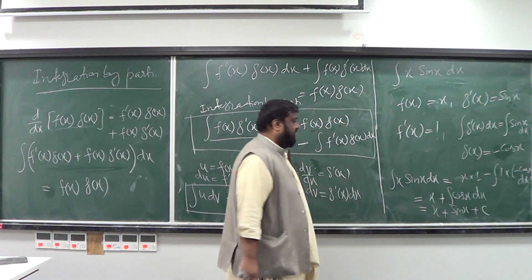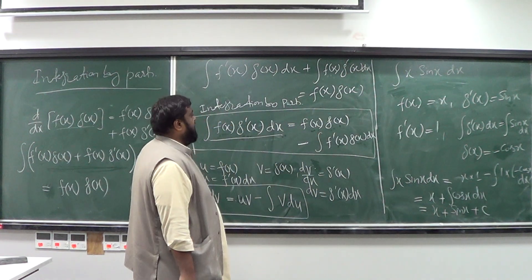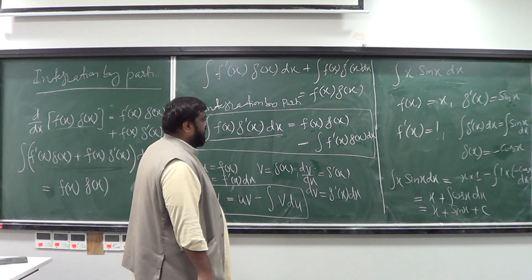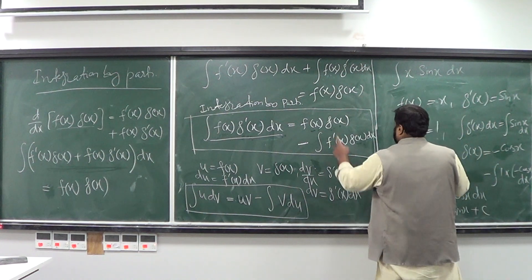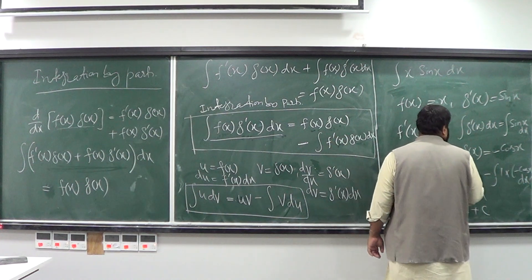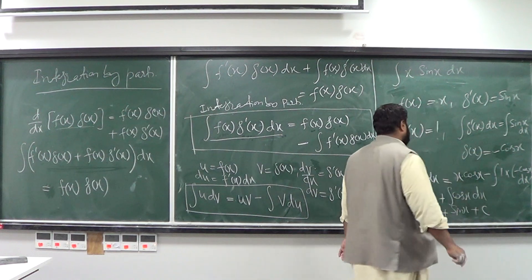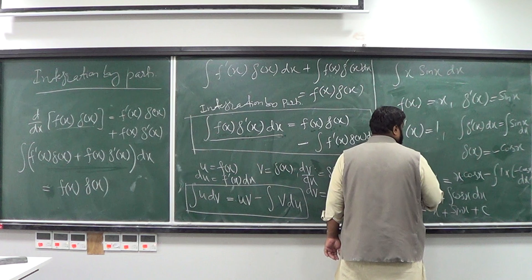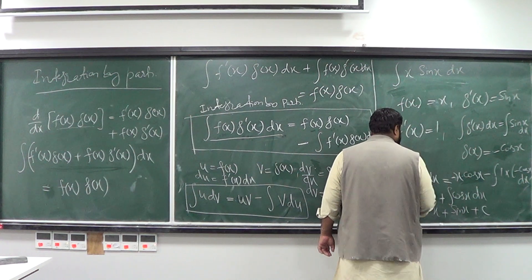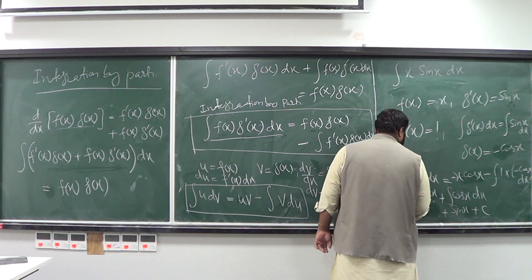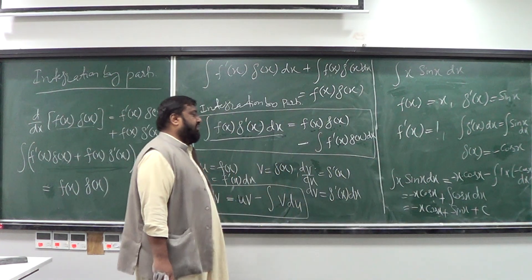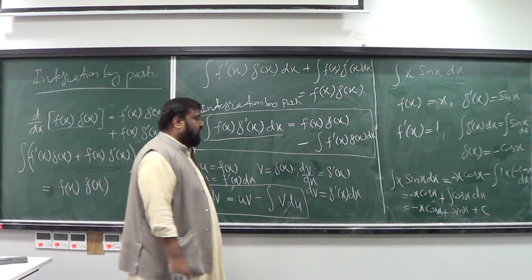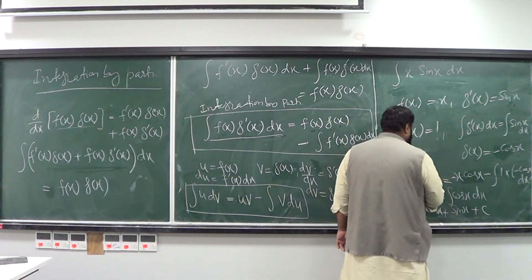The integral of cos(x) is sin(x). So the final answer is: integral of x sin(x) dx = −x cos(x) + sin(x) + C. You can verify this by differentiating: you will get x sin(x).